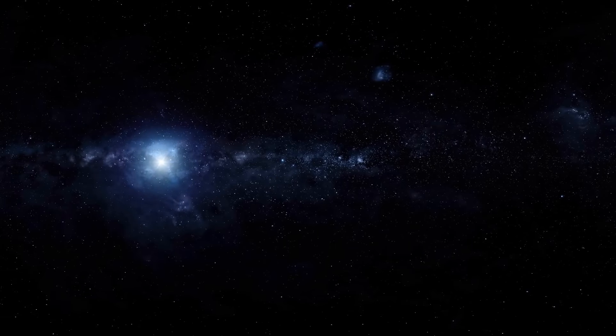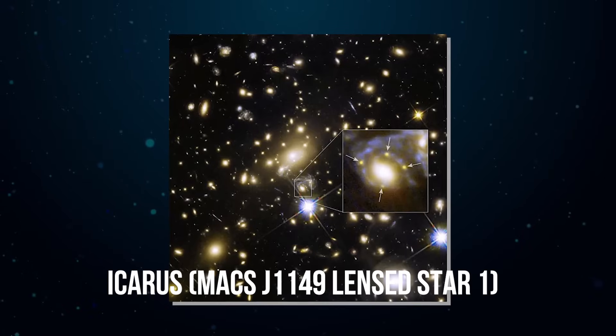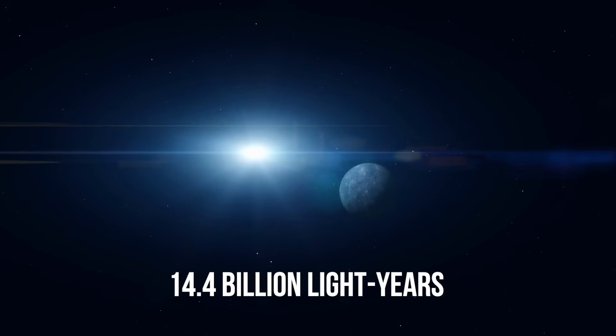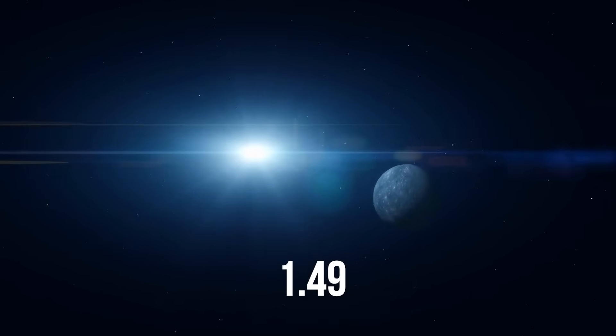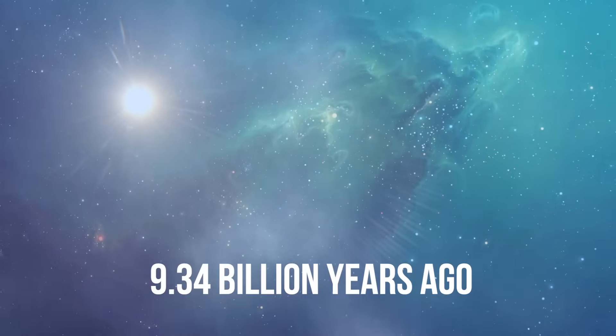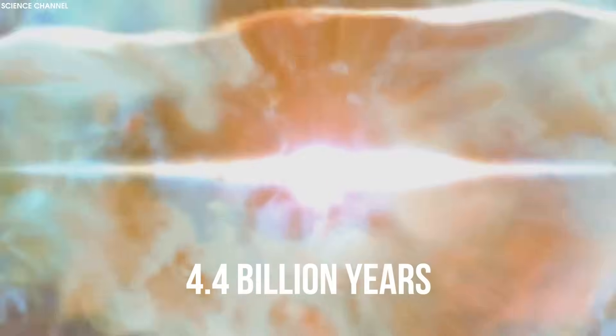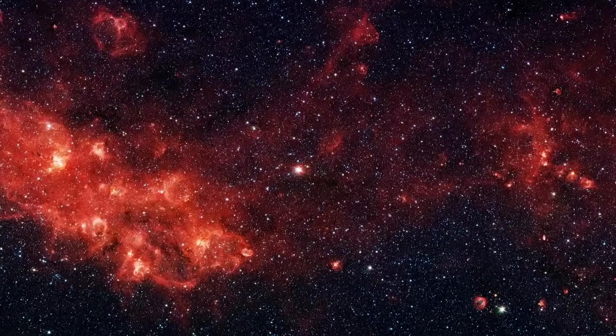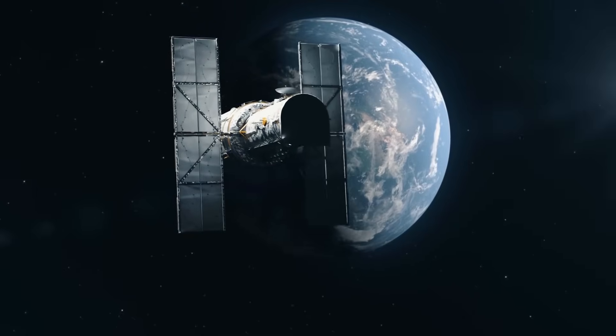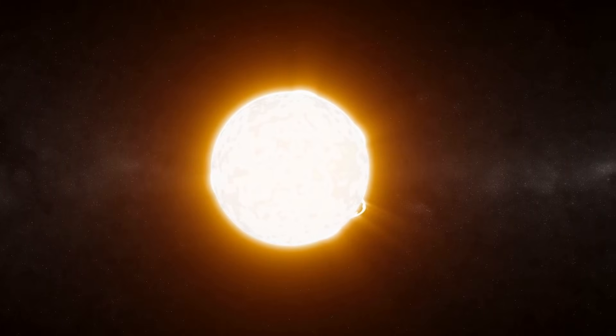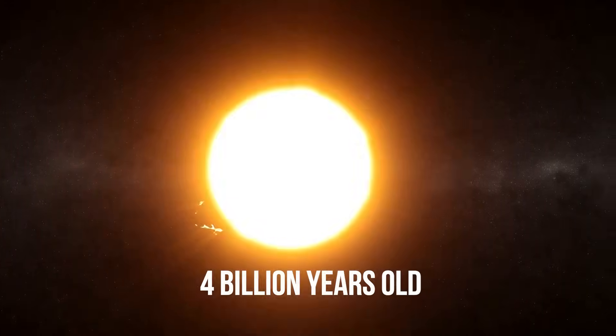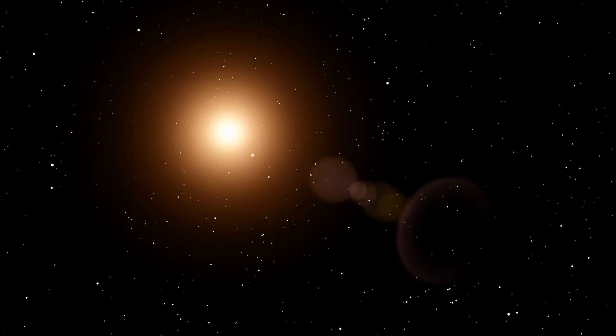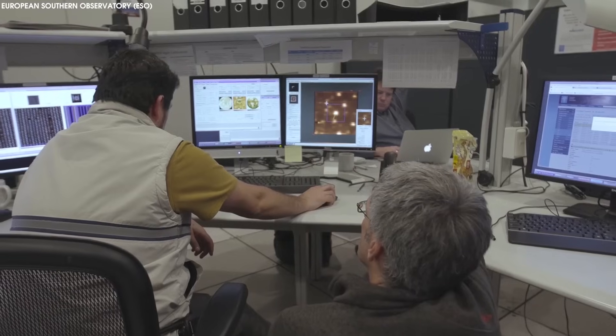The previous record holder for the farthest single star, Icarus MACS J1149 Lensed Star 1, had a co-moving distance of 14.4 billion light-years with a redshift of 1.49. Its light was emitted about 9.34 billion years ago, roughly 4.4 billion years after the Big Bang. The discovery of Earendel represents a significant leap back in time compared to the previous record for a single star discovered by the Hubble telescope in 2018. Icarus existed when the universe was about 4 billion years old, which is approximately 30 percent of its current age, at a time referred to by astronomers as redshift 1.5.